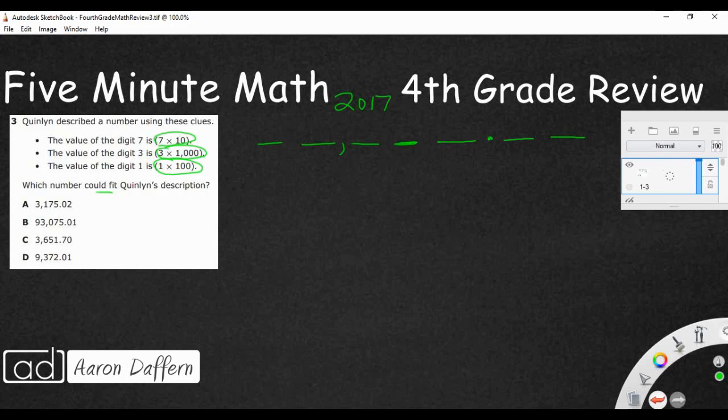We'll stack up the other ones underneath it and see which one matches. So the value of the digit 7 is 7 times 10. That's letting us know that the 7 is in the tens place. So we're going to put a 7 right there. The value of 3 is 3 times 1,000. So our thousands place is going to be right here. That is going to be a 3. And then the value of 1 is 1 times 100. So that is a 1 in the hundreds place. So that's it. Everything else is blank.